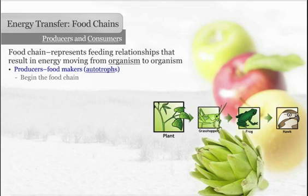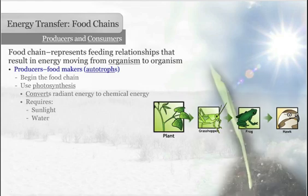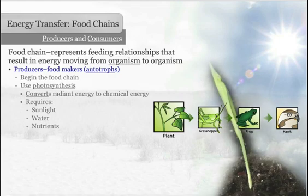Producers use a process called photosynthesis to convert radiant energy from the sun into chemical energy. They rely on components necessary for photosynthesis including sunlight, water, and nutrients. Nutrients necessary for plants to thrive are made available from the process of decomposition.